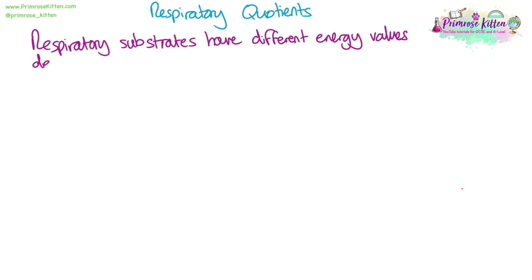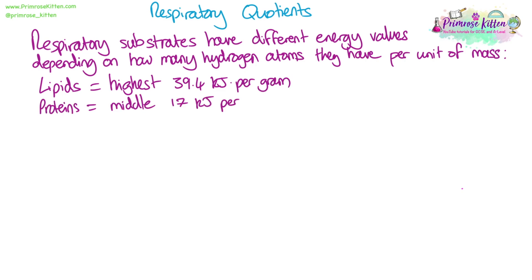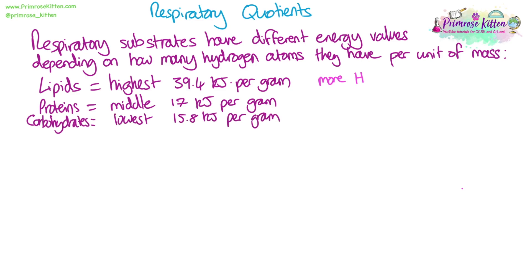The respiratory substrates we looked at have different energy values and this depends on the amount of hydrogen ions they contain. Lipids have the highest number of hydrogen atoms per unit of mass, so they have the highest energy value at 39.4 kilojoules per gram. Proteins are in the middle at about 17 kilojoules per gram, and carbohydrates are the lowest at 15.8 kilojoules per gram.